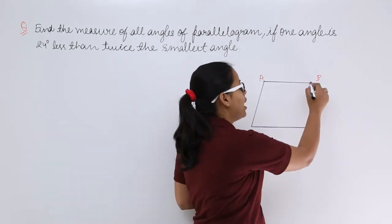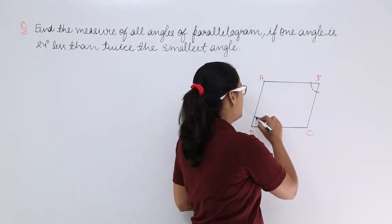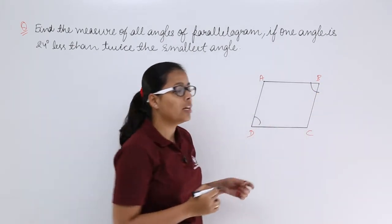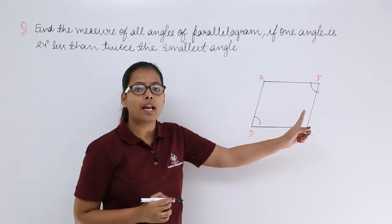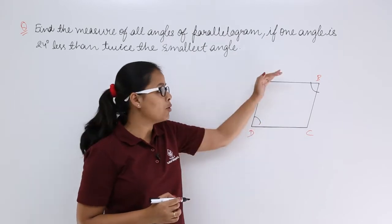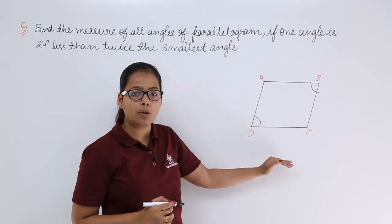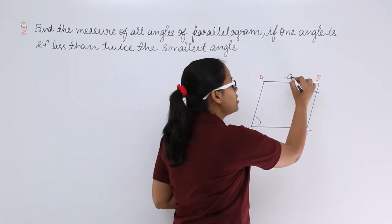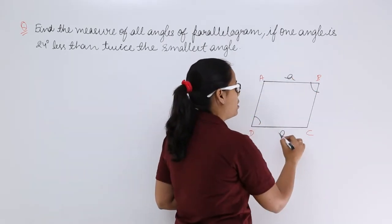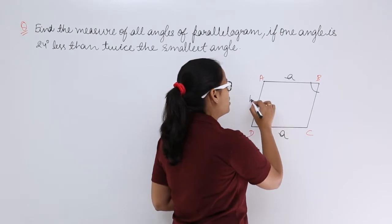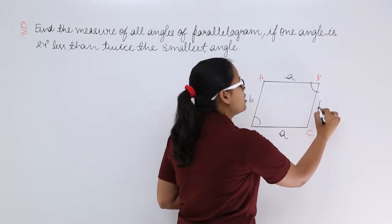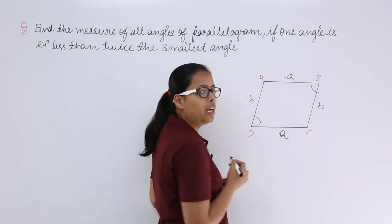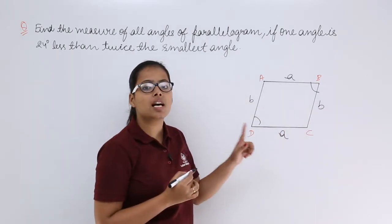In a parallelogram, opposite sides are equal to each other — if this side is 'a', the opposite side is also 'a'; if this side is 'b', the opposite side is also 'b', and these sides are parallel to each other as well.